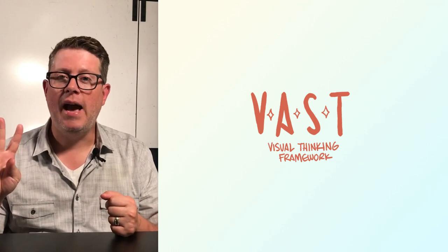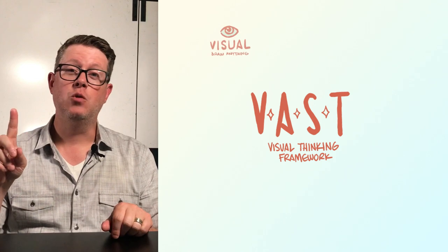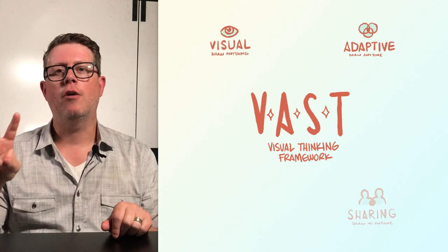There are four paths on the VAST framework. Those paths are visual, adaptive, sharing, and tools.